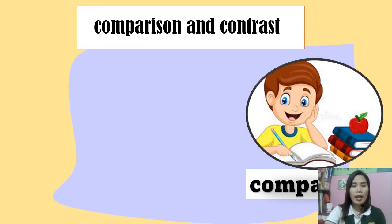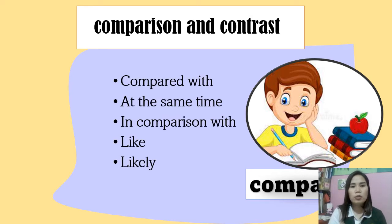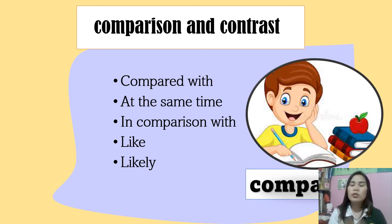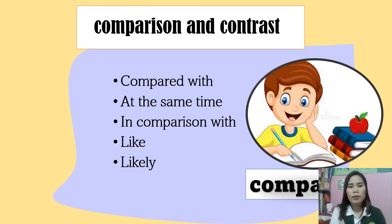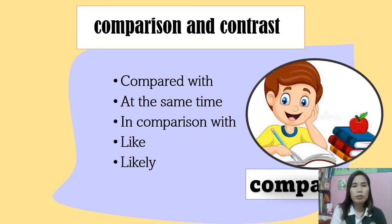Now we have comparison and contrast. These words and phrases indicate that the writer is pointing out similarities between two subjects — they tell us that the second idea is like the first in some way. Examples include: compared with, at the same time, in comparison with, like, and likewise, among many more.